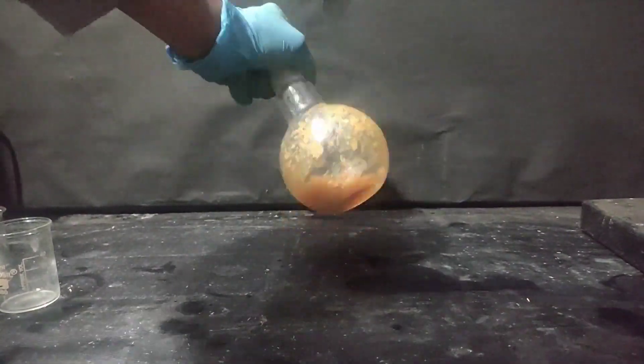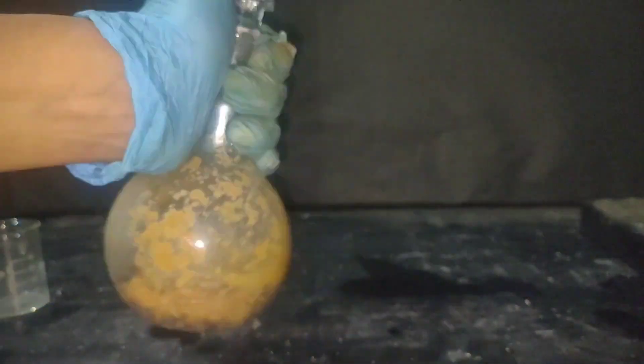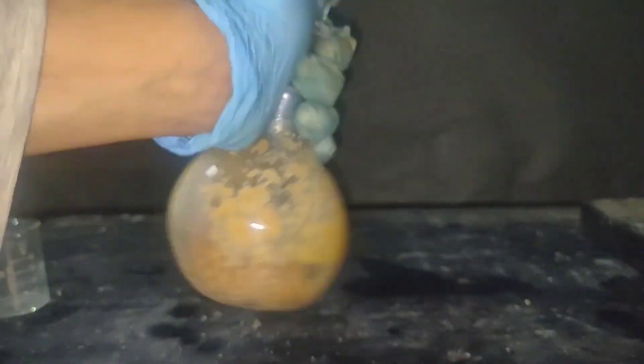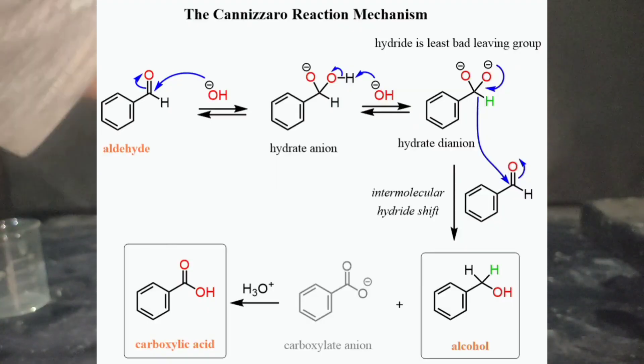On mixing the color changed to orange and the flask warmed up as the reaction is exothermic. It was shaken for several minutes and kept overnight.